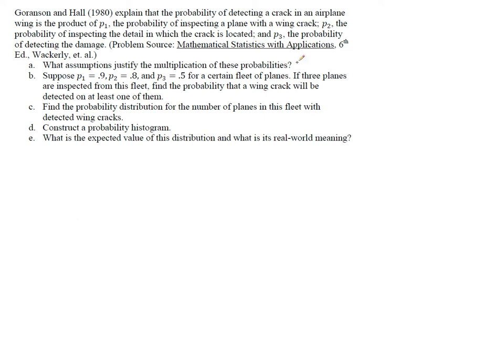So what assumptions can we use for multiplying these probabilities? Well, number one, that we have all three of these things have to happen. So we want event one, event two, and event three all have to happen in order for the crack to be detected.